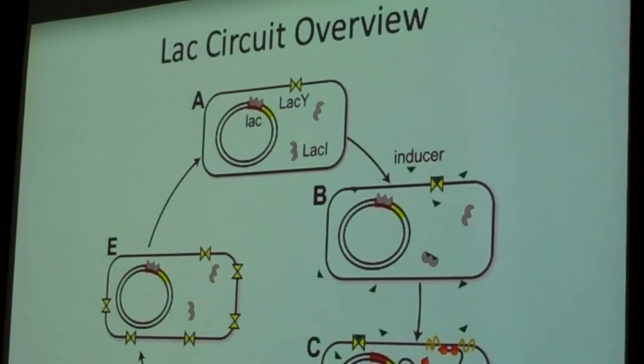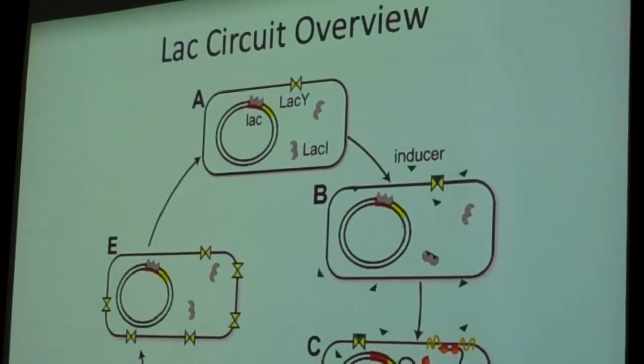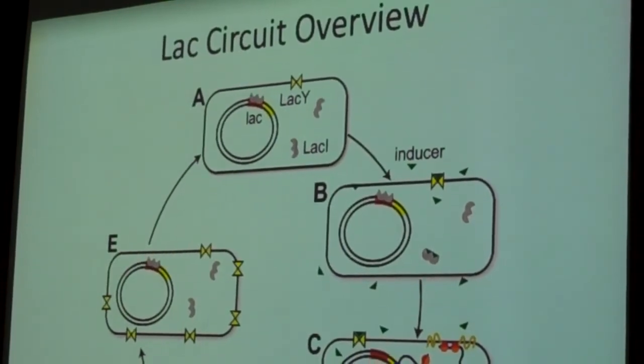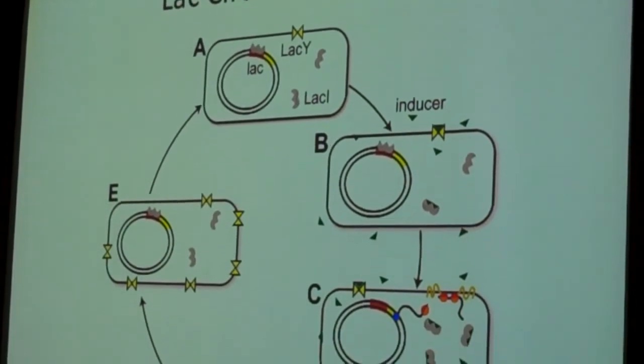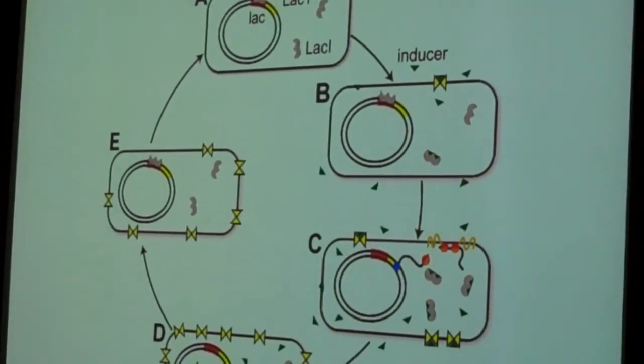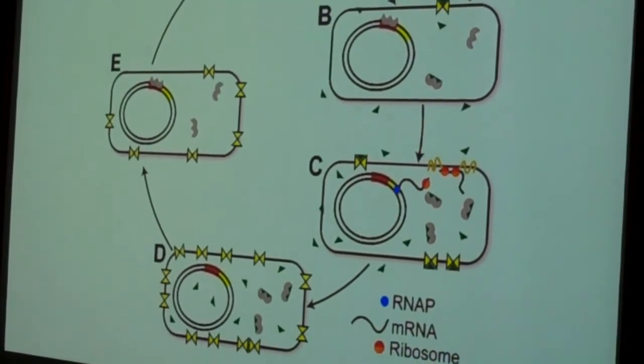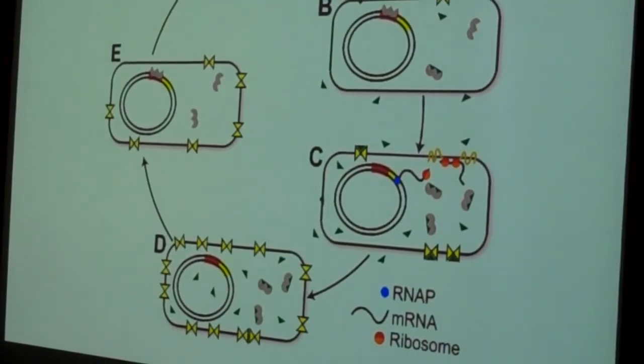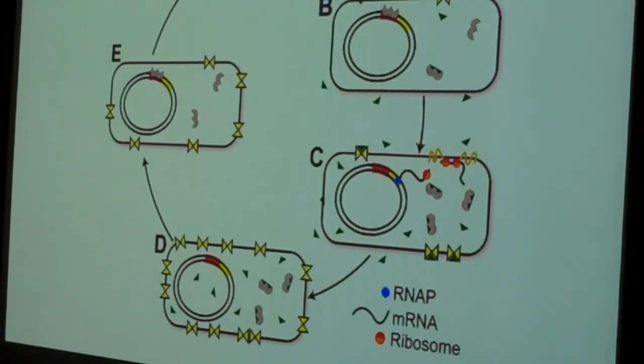This is the very simple lac circuit. And if you're familiar with E. coli at all, the lac circuit is one of those classic examples of repression and suggestive behavior. Basically, E. coli can eat lactose, and lactose is just a sugar. Normally, E. coli likes to eat glucose. So it doesn't make the machinery to digest lactose all the time. That would be a waste of its resources.